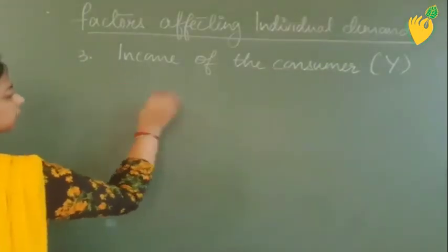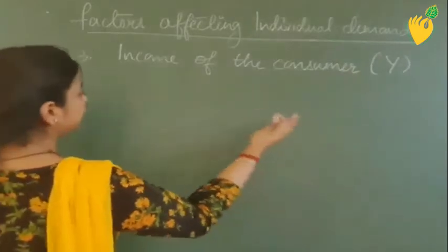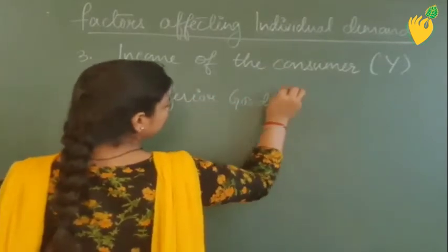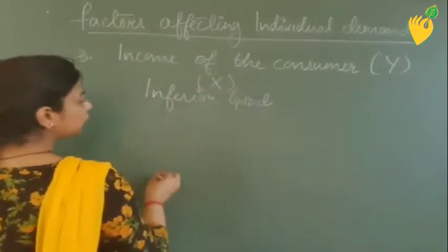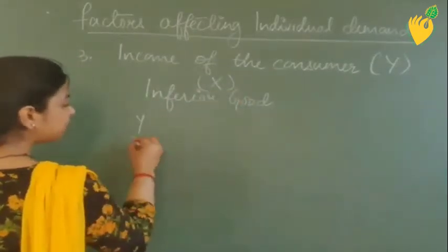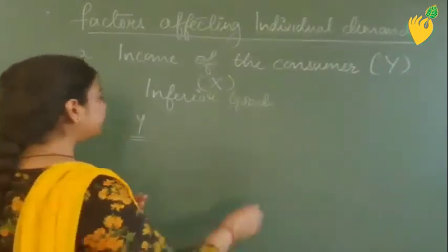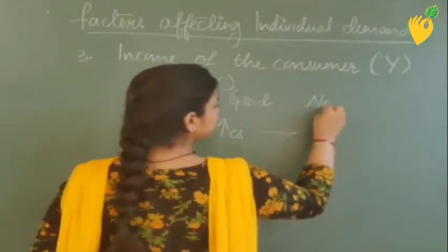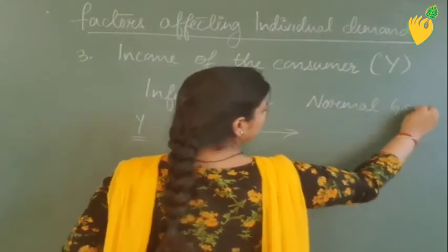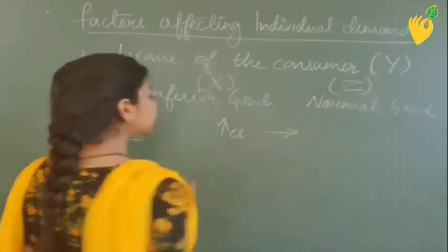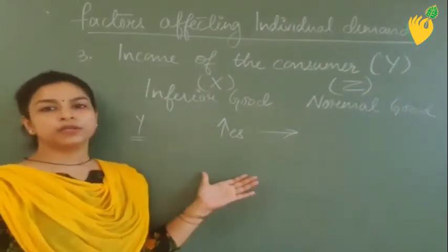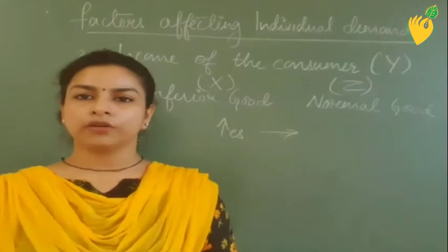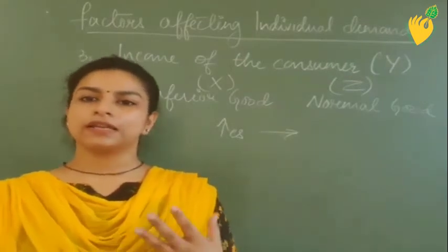The difference between inferior good and normal good is this: assume that X is an inferior good being consumed by a consumer with a given income. If there is an increase in income of the consumer, he will try to shift to a normal good. That is the basic difference between inferior good and normal good, and that is the psychology of the consumer.